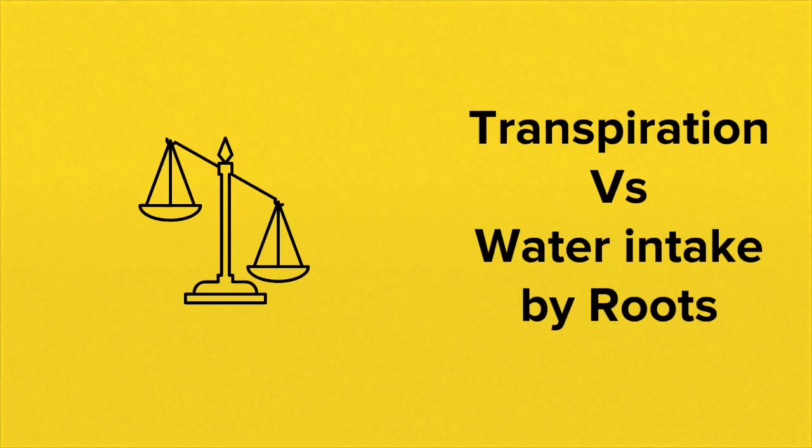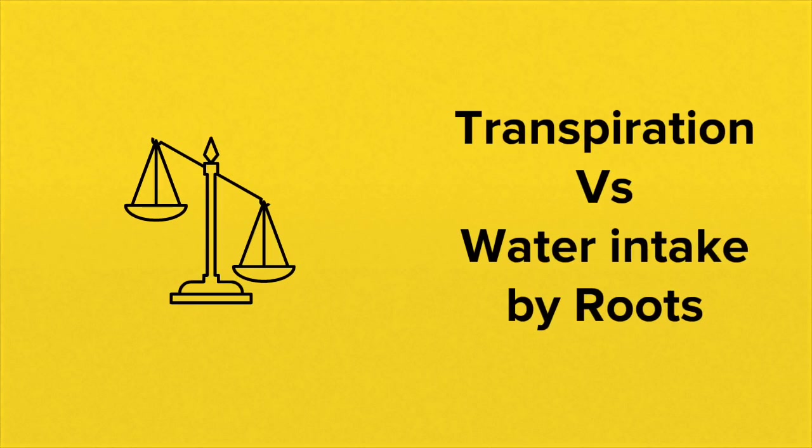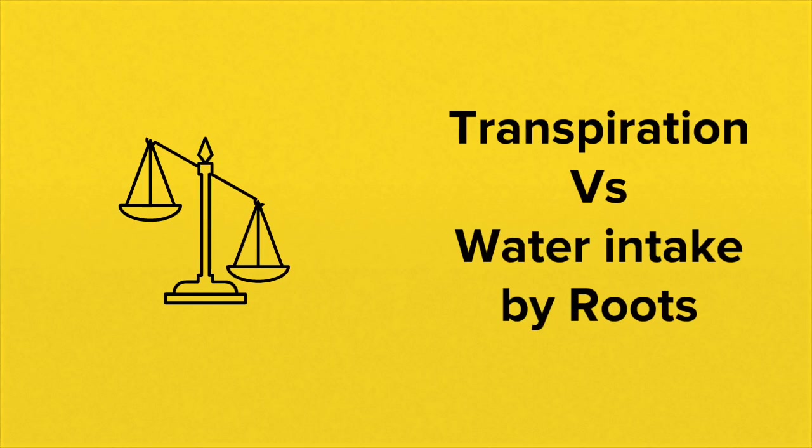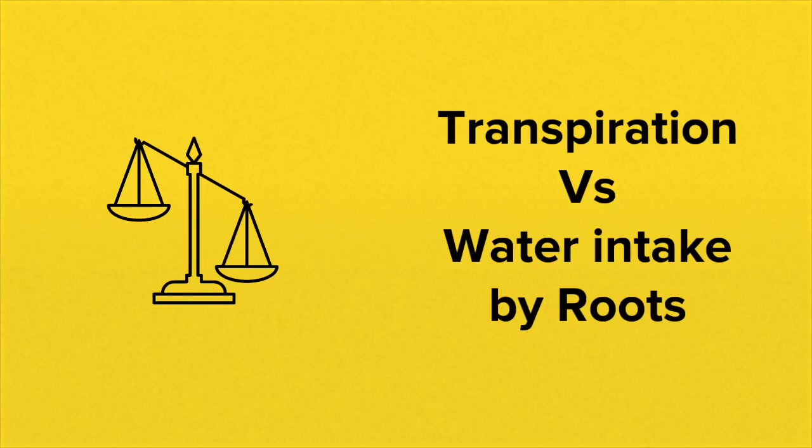If you're considering the plant as a whole, well then you'd have to consider the transpiration rate versus the water intake by the roots. If the transpiration rate was very high and there wasn't very much water being taken in, well then turgidity is not going to be maintained.